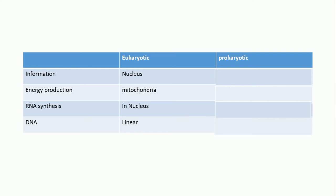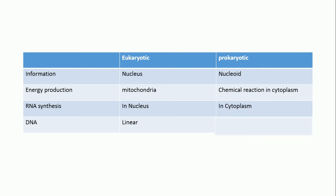In prokaryotic cells, the information center is the nucleoid, energy production occurs by chemical reaction in the cytoplasm, and RNA synthesis occurs in the cytoplasm, while the DNA is circular.